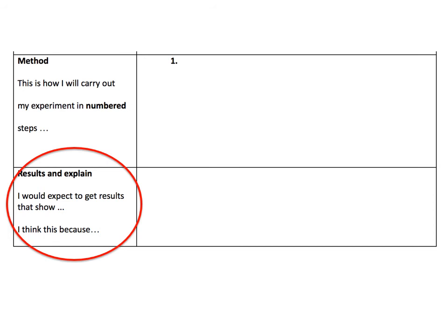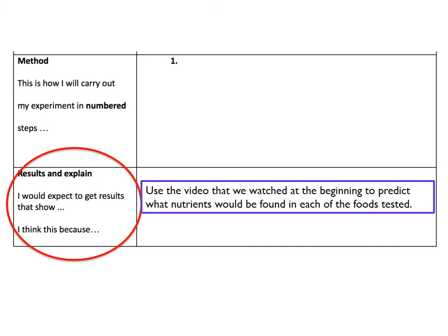The last section is the explanation of your results. Use the video we watched at the beginning to predict what nutrients would be found in each of the foods that were tested. You could also think of new foods not mentioned in that video and think about how you would test them and what you predict they contain. Do you predict they contain starch, sugar, fat, or protein — and why?